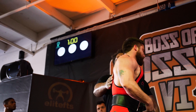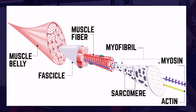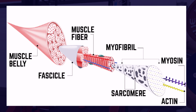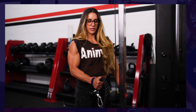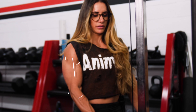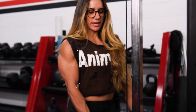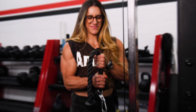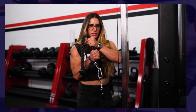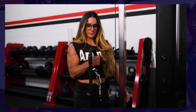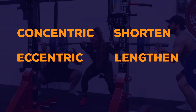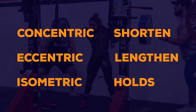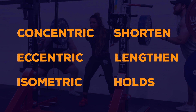A muscle fiber is a bundle of contractile structures called myofibrils that work together to create a muscle contraction that pulls the two attachment points closer together. It resists elongation or maintains a fixed position against an external load. These are called concentric, eccentric, and isometric contractions respectively.